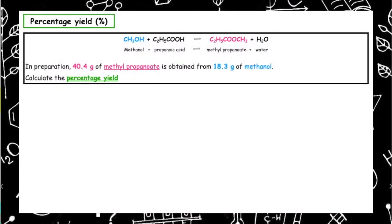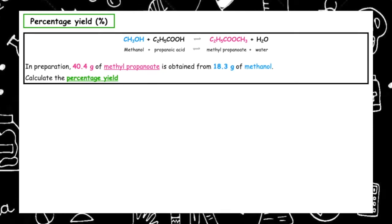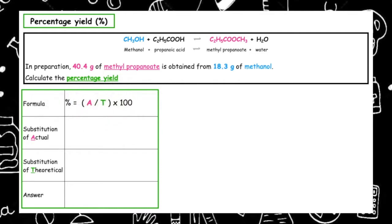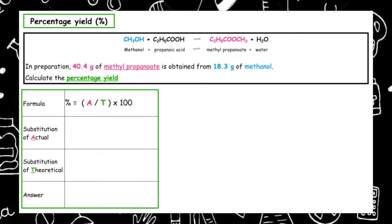In preparation, 40.4 grams of methylpropanoate is obtained from 18.3 grams of methanol. Calculate the percentage yield. We always want to calculate the percentage yield of our product — in this case, methylpropanoate. The first thing we want to do is write out our formula: percentage is equal to actual over theoretical times 100. We've been given the actual yield of our methylpropanoate, so we substitute that in as 40.4 over T times 100.